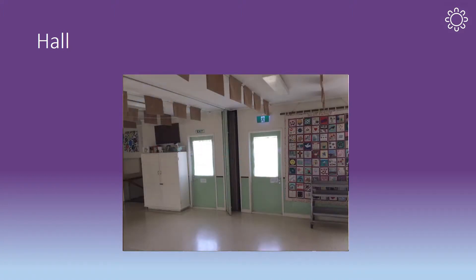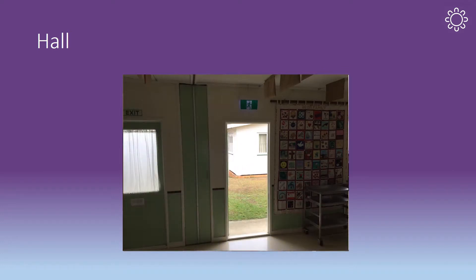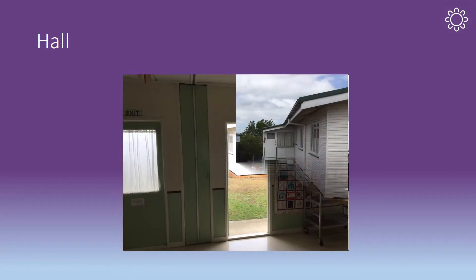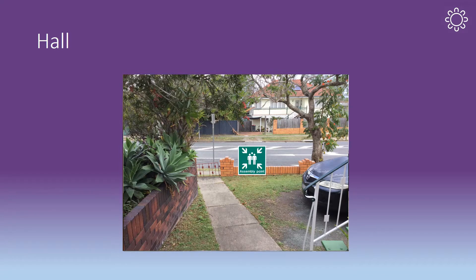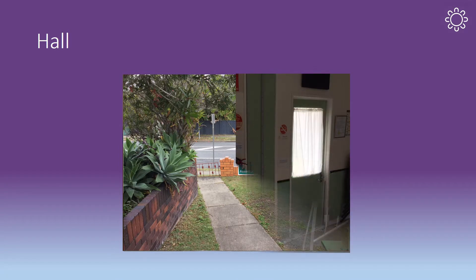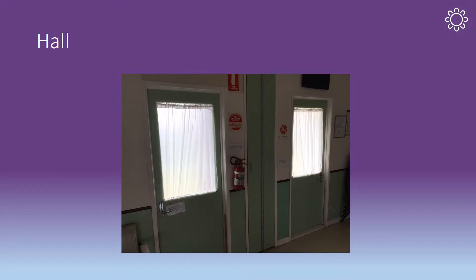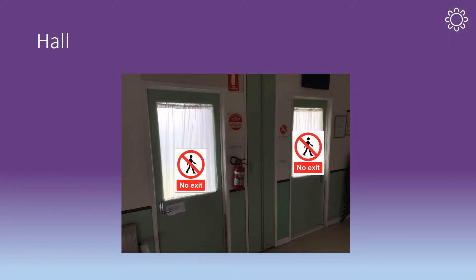If this exit route is blocked, the secondary evacuation route from the hall is through the exit door on the southern side of the hall. Occupants should move through the exit door and proceed down to the front of the manse, which serves as the assembly point. Whilst there are also doors on the northern side of the hall, these should not be used as these doors exit into a locked courtyard.